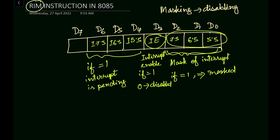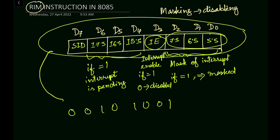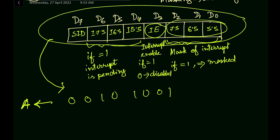The most significant bit D7 will represent SID — the serial input data. Whatever data is arriving as serial input will be reflected here. After executing this instruction, suppose the status values are 0 0 1 0 1 0 0 1 — this data will be written into the accumulator, allowing us to understand which interrupt is pending, which is enabled, and whether there is a masked interrupt or not.